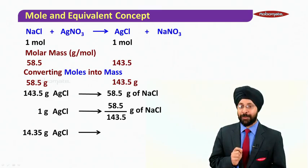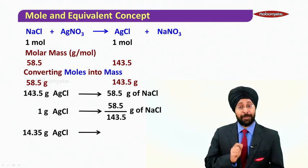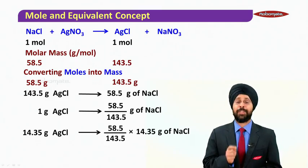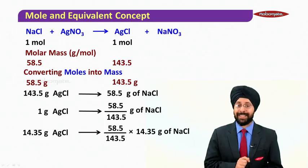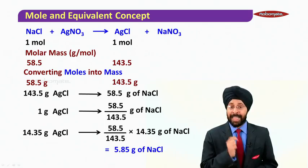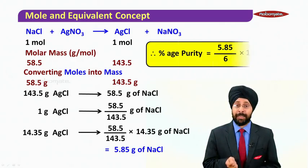So that is going to be produced by 58.5 by 143.5 into 14.35 grams of NaCl, which comes out as 5.85 grams of NaCl. That was the actual amount. Theoretically given is 6 grams.